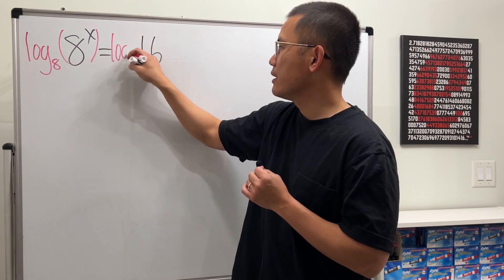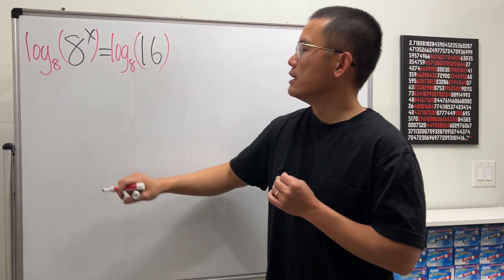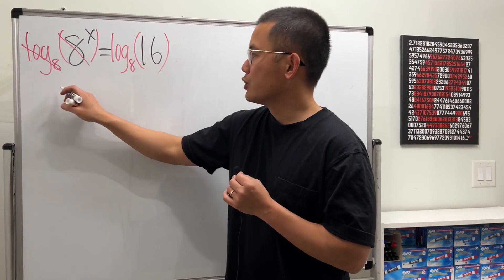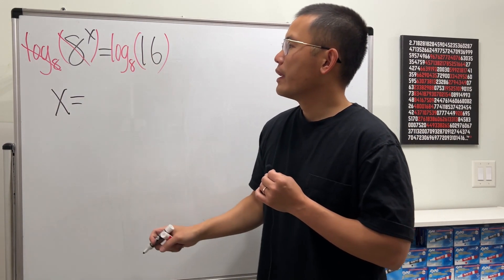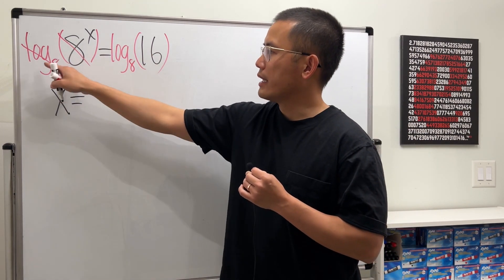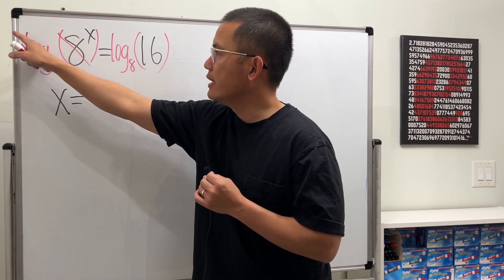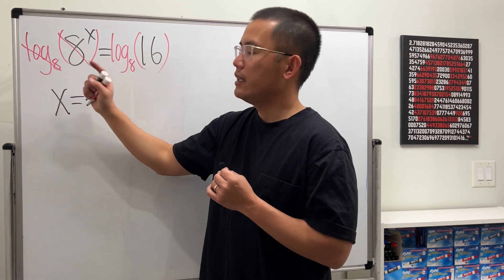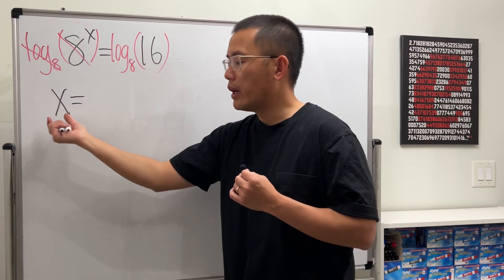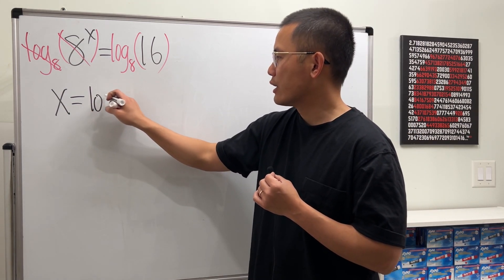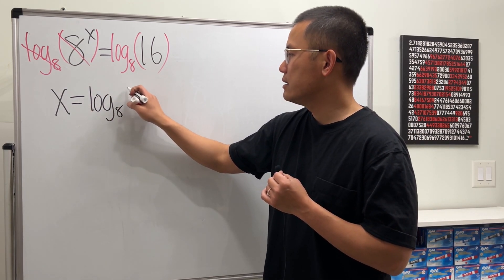And of course, we do the same thing to both sides. So that this and that can cancel. And the x will just be by itself. You can look at it like this way. They cancel and get the x by itself. Or you can look at it as you put the x to the front. And log base 8 of 8 is equal to 1. Either way, you just get x by itself. And then on the right-hand side, we just have to figure out log base 8 of 16.